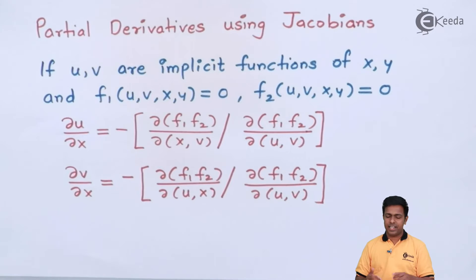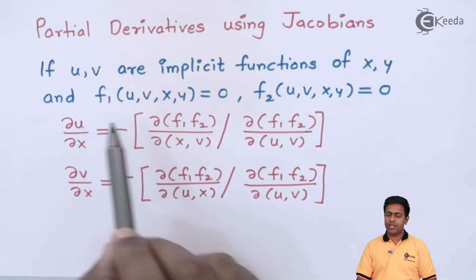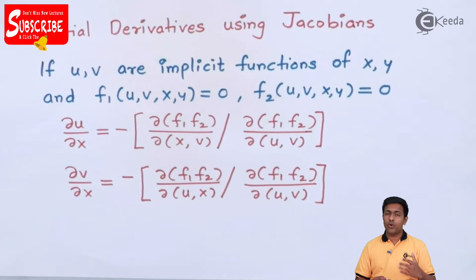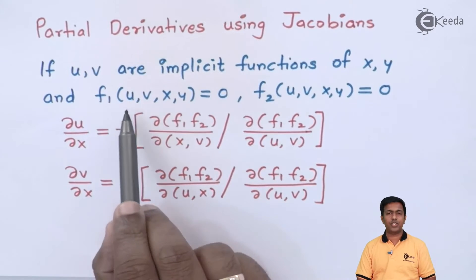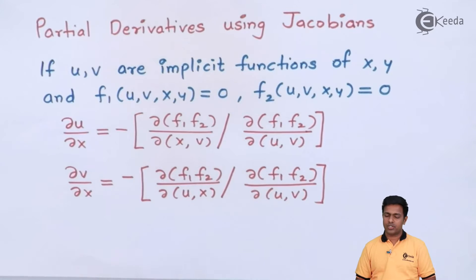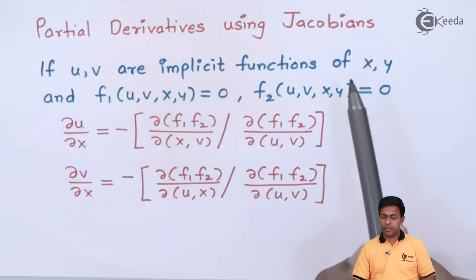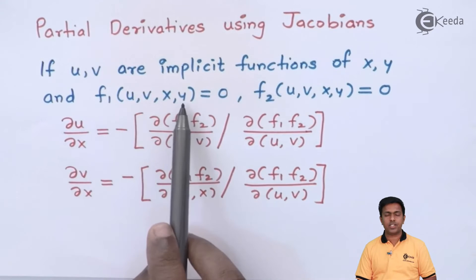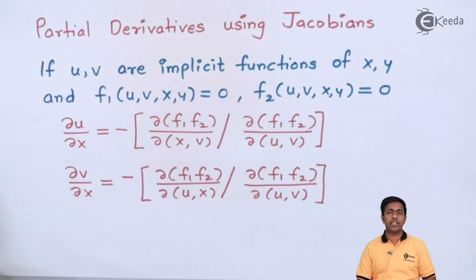So now let's say if u and v are the implicit function of x and y. We know what is the implicit function. We have seen in the partial differentiation that whenever we have the implicit function then the function of that variable is equal to zero. So since u and v are the implicit function of x and y, we can say that f1 of (u,v,x,y) is zero and f2 of (u,v,x,y) is equal to zero.